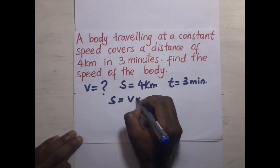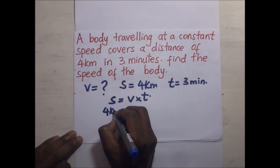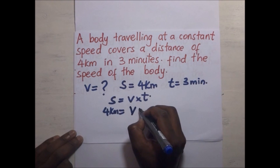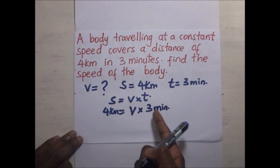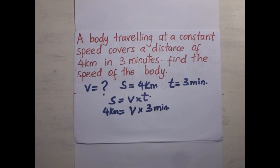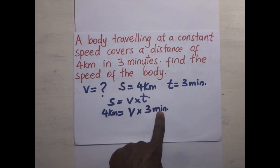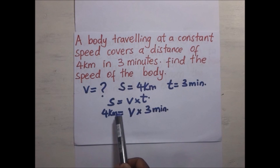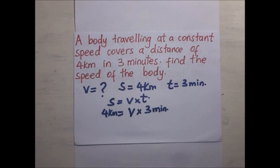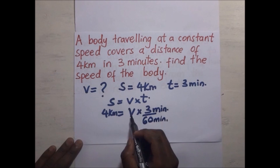We know that 4 kilometers equals speed V times 3 minutes. We need to harmonize units — distance is in kilometers and time is in minutes, so we must convert minutes to hours so the speed comes out in kilometers per hour. We convert 3 minutes to hours by dividing by 60 minutes, then make V the subject of the formula.